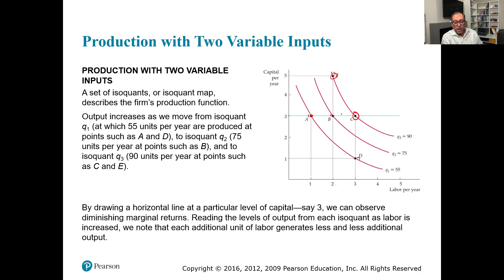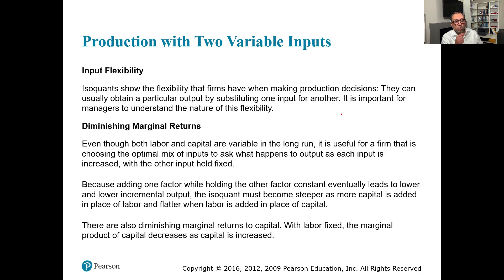By drawing a horizontal line at a particular level of capital, say three, we can observe diminishing marginal returns. Reading the level of output from each isoquant as labor is increased, each additional unit of labor generates less and less additional output. Isoquants show the flexibility that firms have when making production decisions — they can usually obtain a particular output by substituting one input for another.